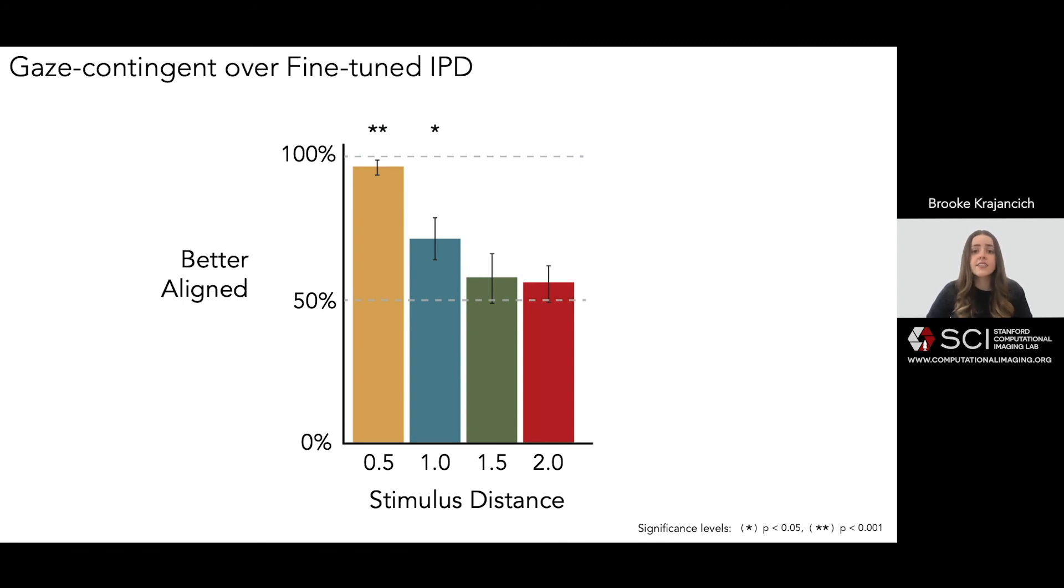This confirms that accounting for the gaze contingent shift of the no-parallax point is crucial for accurate reproduction of stereoscopic disparity, particularly for arms-reach-based tasks.